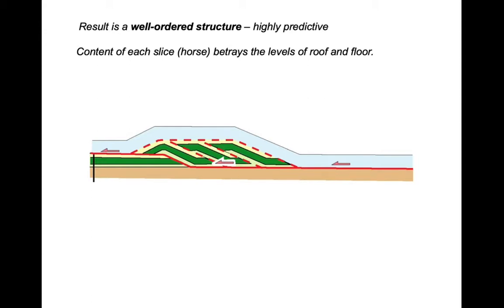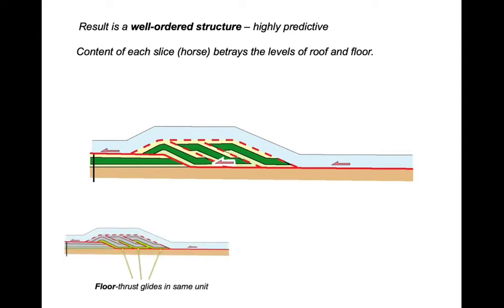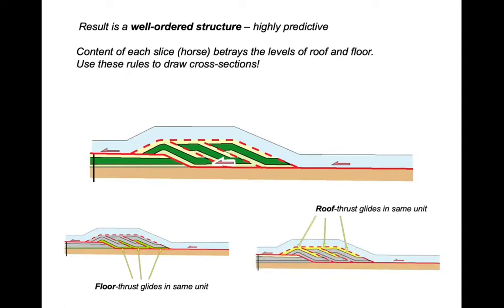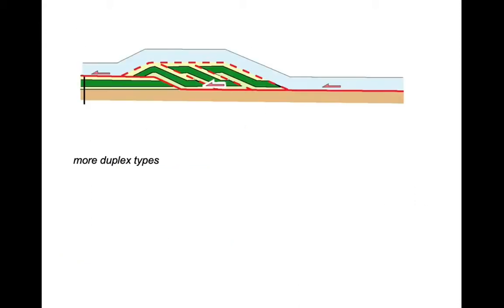Let's look along the floor thrust. You can see that it glides in the same unit — the oldest one involved in the duplex. The roof thrust glides along the top of the youngest unit within the duplex. So when drawing cross-sections through duplexes, we can use the stratigraphic content to predict the positions of the main bounding thrusts. It sounds simple, but actually duplexes can come in many shapes and sizes.